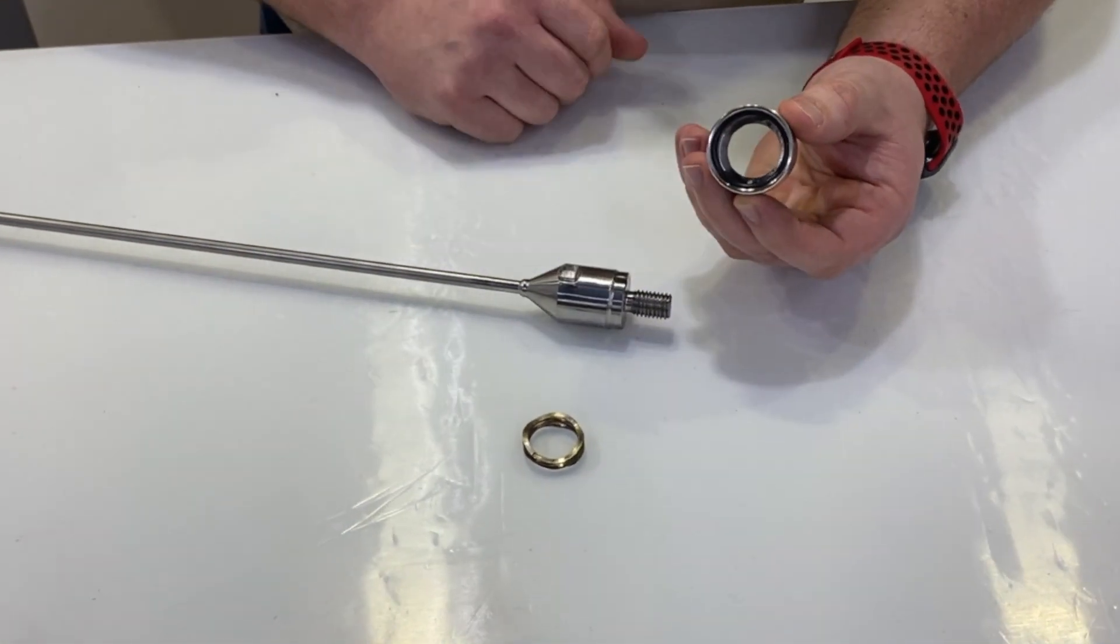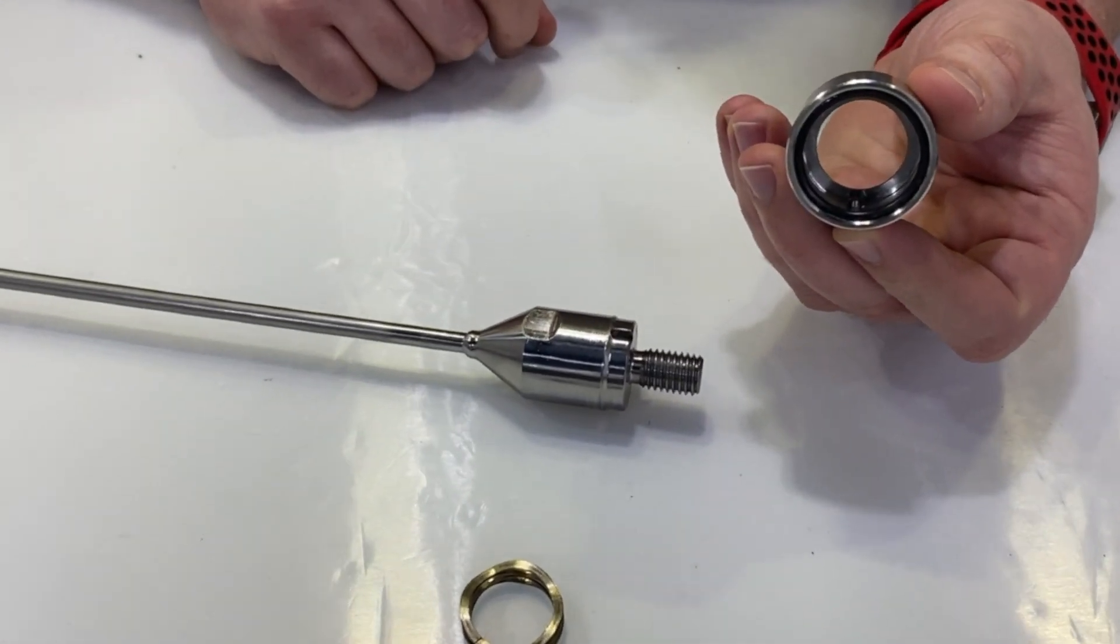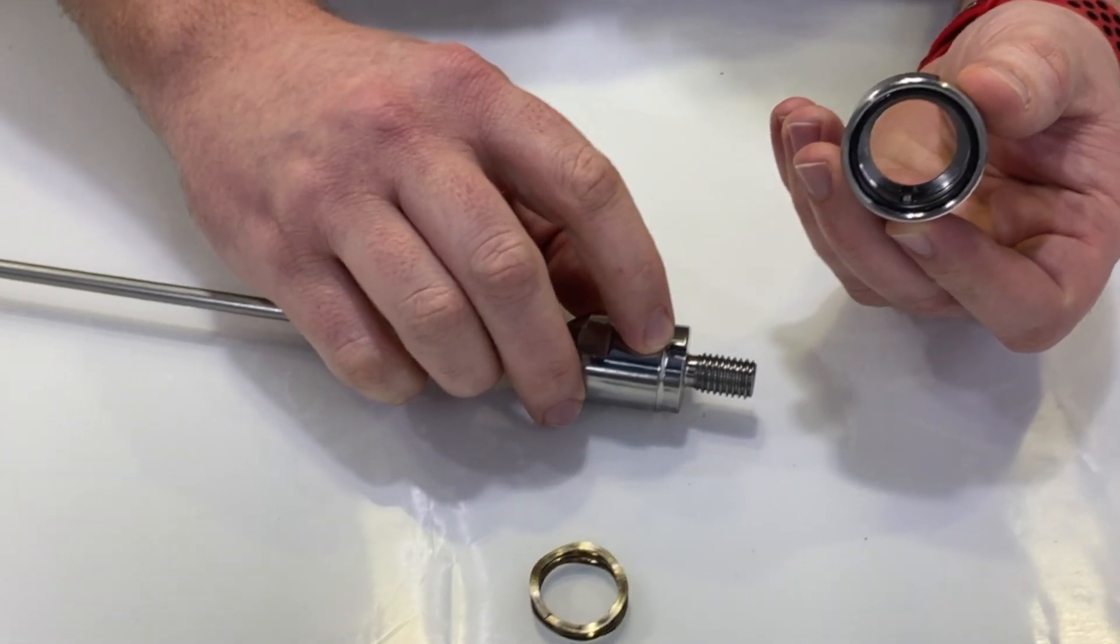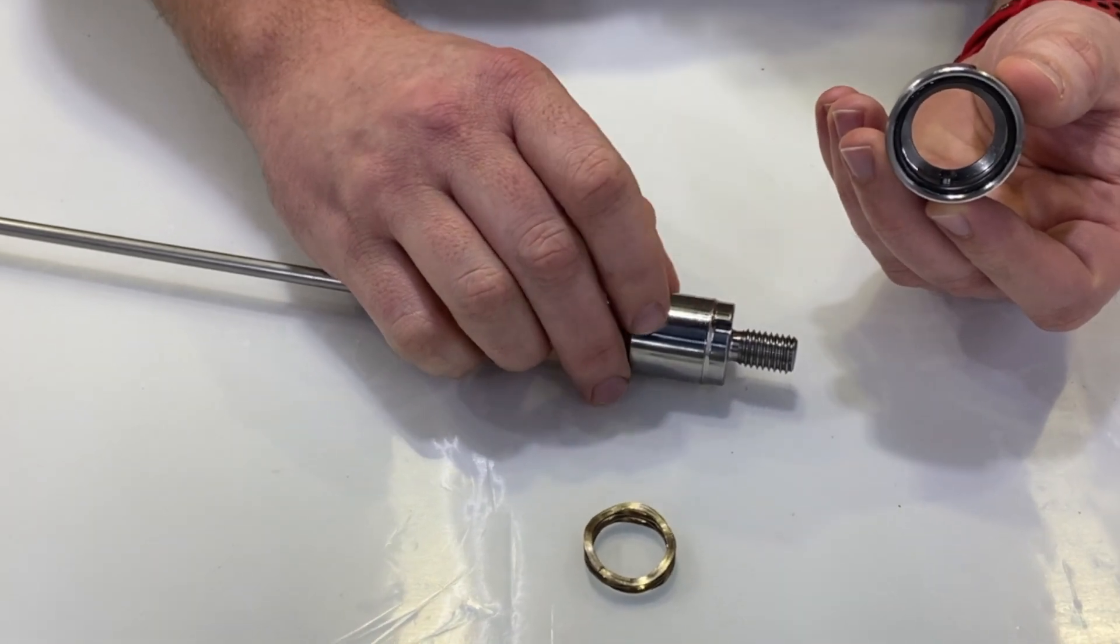Also note the alignment pin that will fit into this shoulder here on the top side of the shaft.